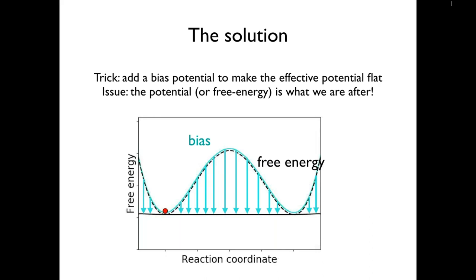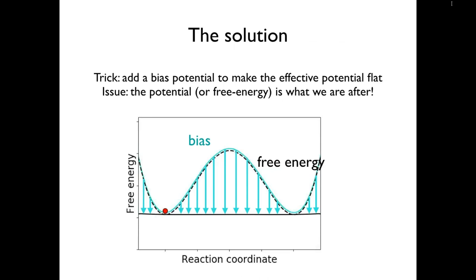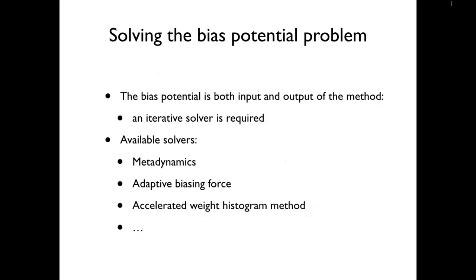When you apply such a bias potential, you've modified your landscape and are no longer sampling according to the Boltzmann distribution of the original system. But since you know what bias you've applied, you can exactly correct the weights of your samples using the Boltzmann factor of the bias potential. The question then becomes: how do you come up with an effective bias potential for a general system? This is a challenge because the bias potential is both the input and the output of the method — if you knew the free energy profile, you'd already have your answer. The way to solve this is with an iterative solver. Several solvers are available, including adaptive biasing force; today I present the accelerated weight histogram method.